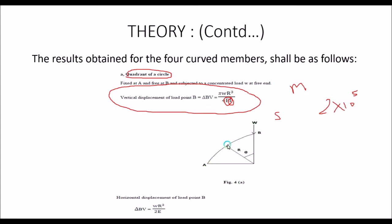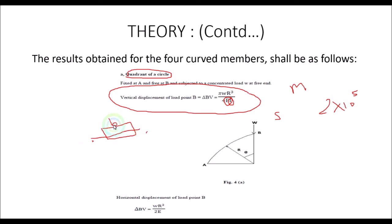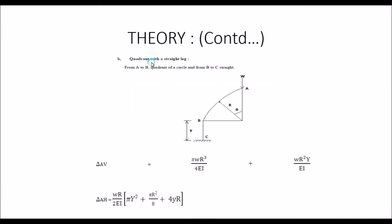You measure the cross-section of the quadrant of circle using the vernier caliper. The cross-section is rectangular, so you measure its dimensions and calculate I = bd³/12 about the x-x axis. Then you can calculate the theoretical vertical displacement. The horizontal displacement is also calculated using the formula W·R³ / (EI). Similarly, for the second case — quadrant with straight leg — you measure the straight leg length Y using a scale, with W being the applied load and R the radius.